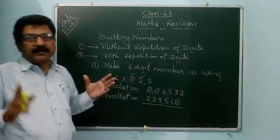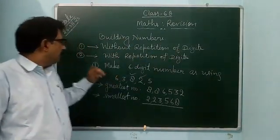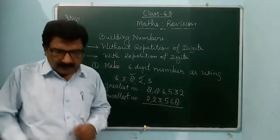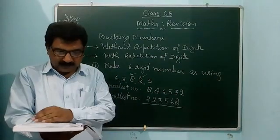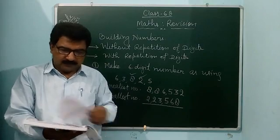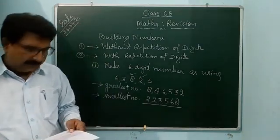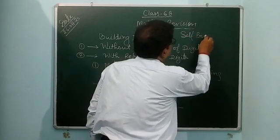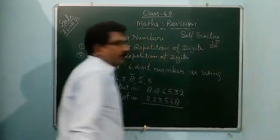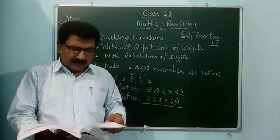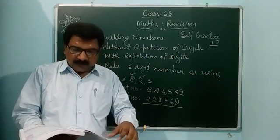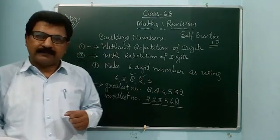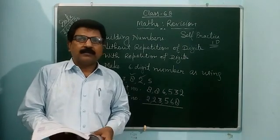So in this way you can build numbers in two ways: building numbers without repetition of digits and with repetition of digits. I have given some examples. Today you revise page number 15, example 12, and self-practice exercise 1D. I hope you are revising very well — at least five to eight questions daily. Ascending and descending orders of numbers is very easy and I have also given classes and explained such numbers, so you can see the before videos.